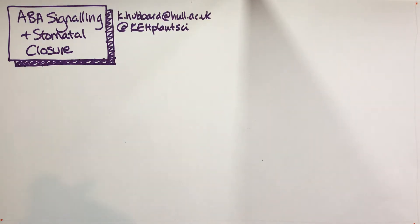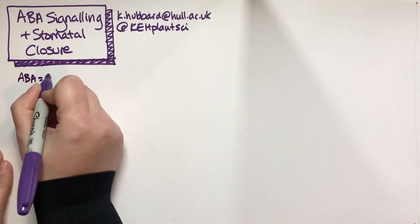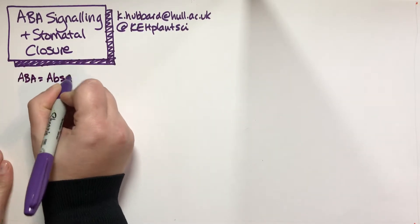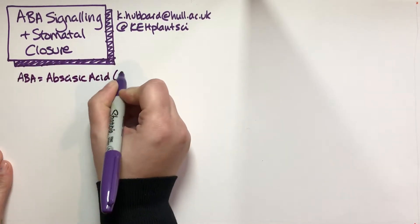In this video we're going to be thinking about a signal transduction process in plants, specifically the major drought hormone ABA. ABA equals abscisic acid, which is a drought hormone.